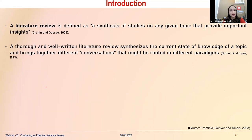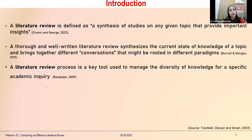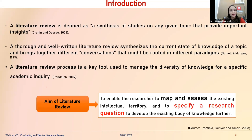These conversations may be rooted in different paradigms — you may talk about the pros, the cons, what has been done, and what research methodology was used. This is a key tool used to manage the diversity of knowledge for a specific academic inquiry. In sum, the aim of a literature review is to enable the researcher to map, assess, and evaluate the existing intellectual territory.